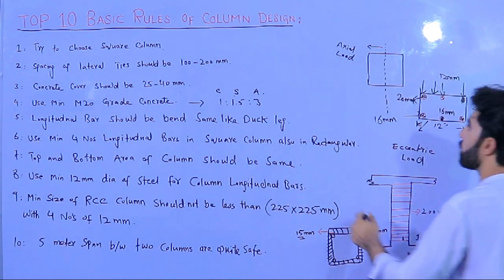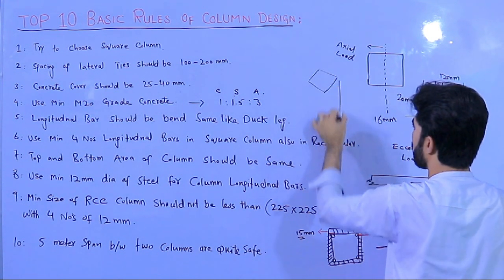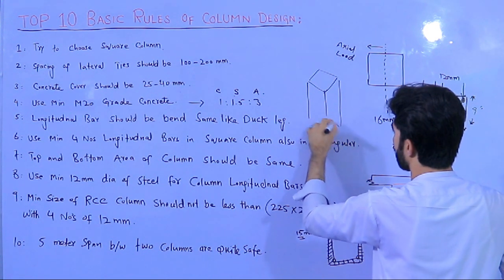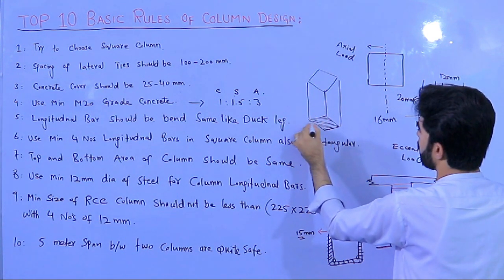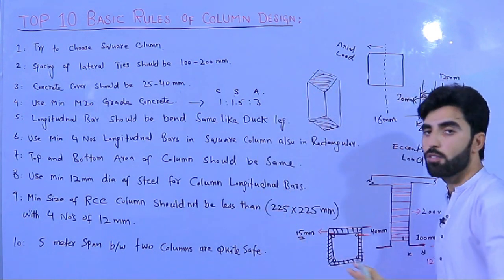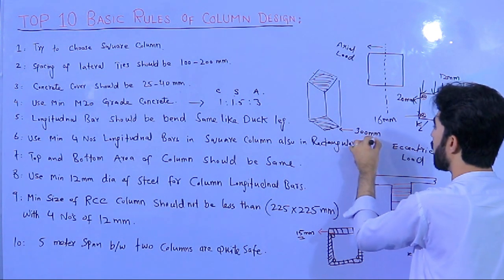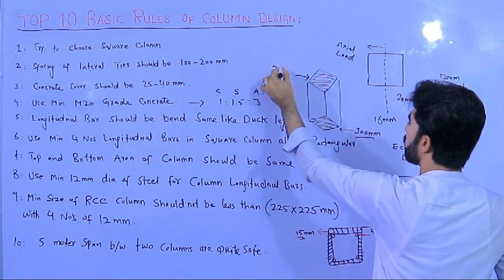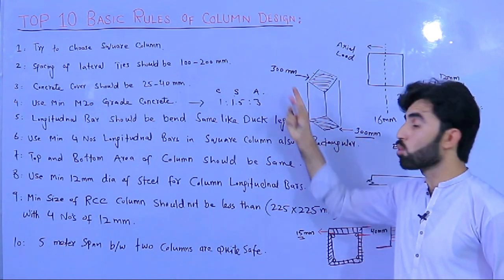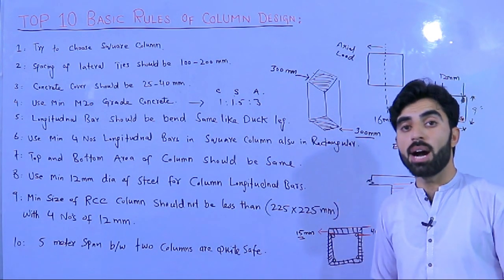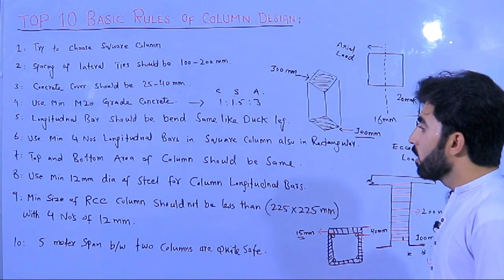The seventh basic rule: the top and bottom cross-sectional area of the column should be the same. For example, if the bottom area is 300 mm, the top should also be 300 mm. It does not mean the bottom is 300 mm and the top can be 200 mm — the top and bottom dimensions of the column must be equal.